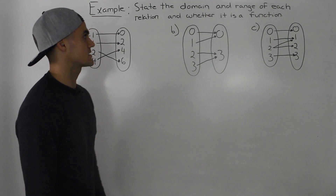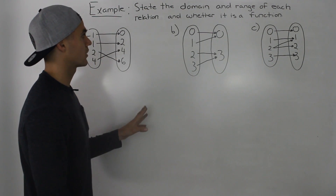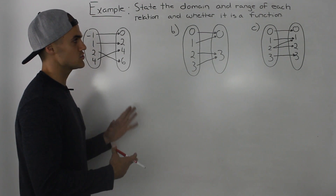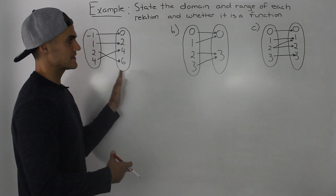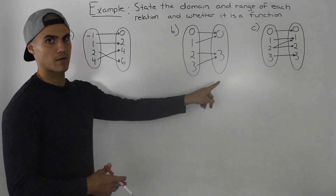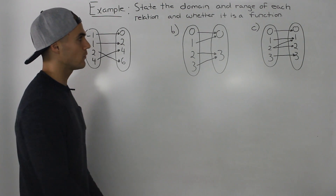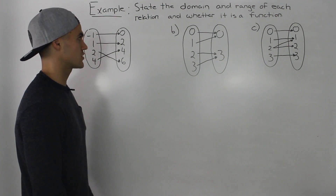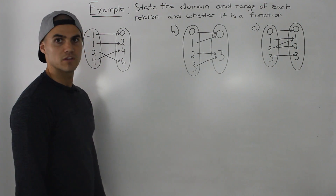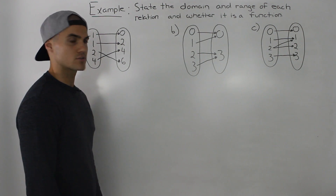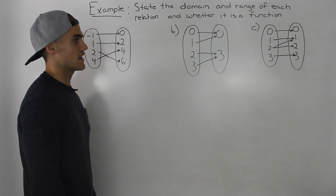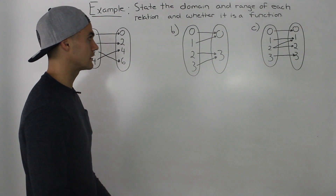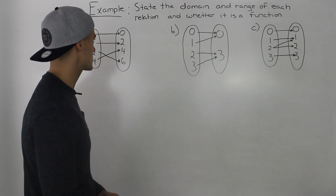Moving on to the next example, we're going to be finding the domain and range from a set of mapping diagrams and whether or not these relations are functions or not. This is actually going to be very similar to the example that we did before with the table of values and the list of coordinates.